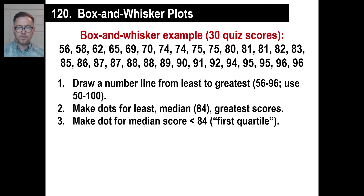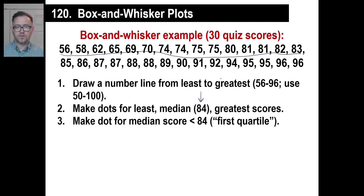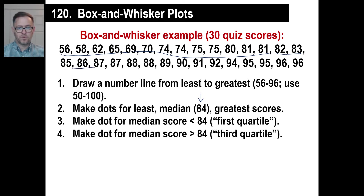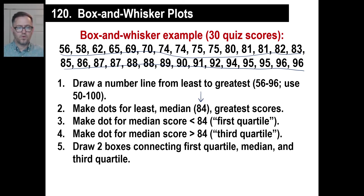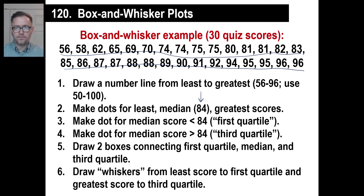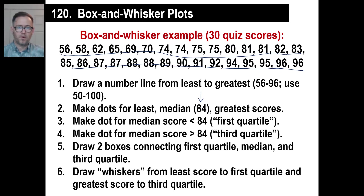Then you make a dot for the median score that is less than 84 — in other words, the median of the lower half, basically. So you're making a dot for the median of those scores. That's called the first quartile. The second one is called the third quartile. Now you're going to draw two boxes that connect the first quartile, the median, and the third quartile. Last thing is you're going to draw whiskers from the least score to the first quartile, and then from the greatest score to the third quartile.